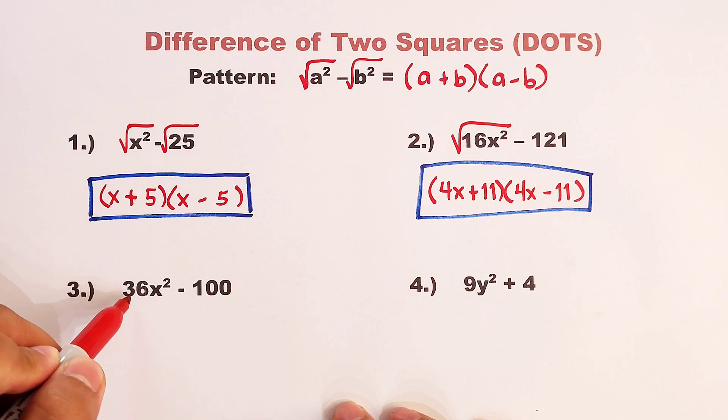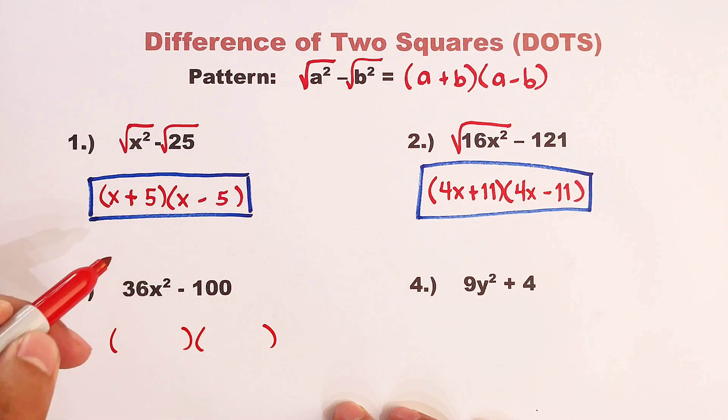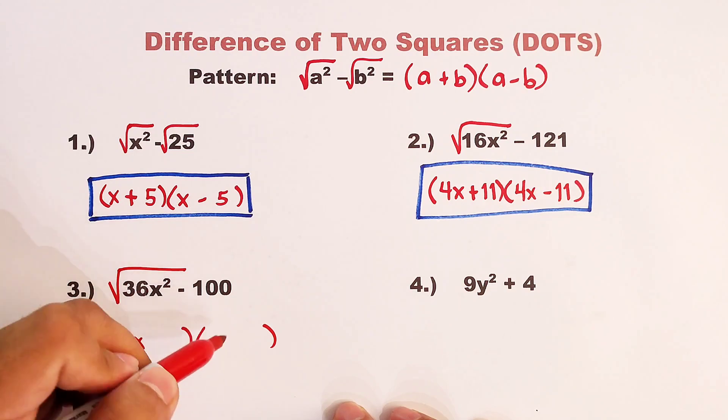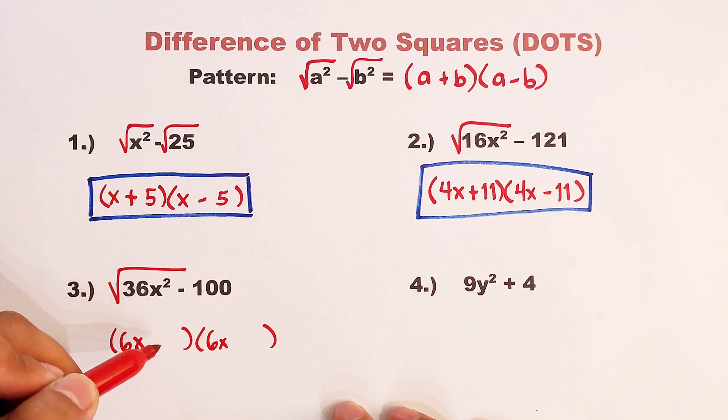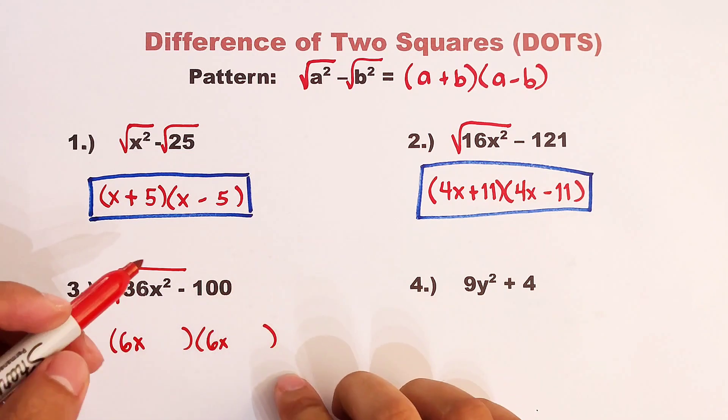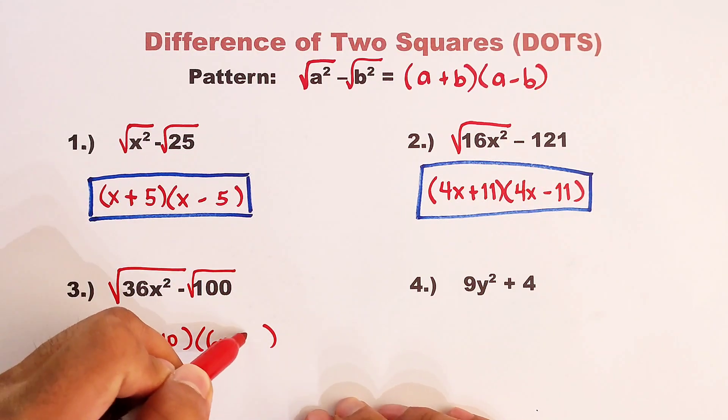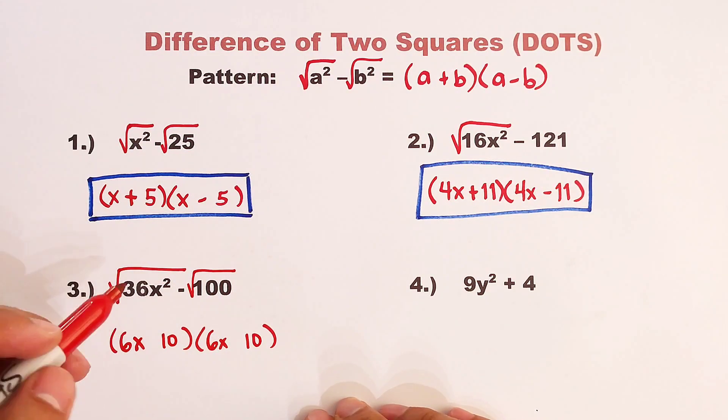We have 36x squared minus 100. So let's have this. The square root of 36 is 6. The square root of x squared is x. So this is 6x and 6x. For 100, the square root is 10 and 10. So we can have here plus and minus.